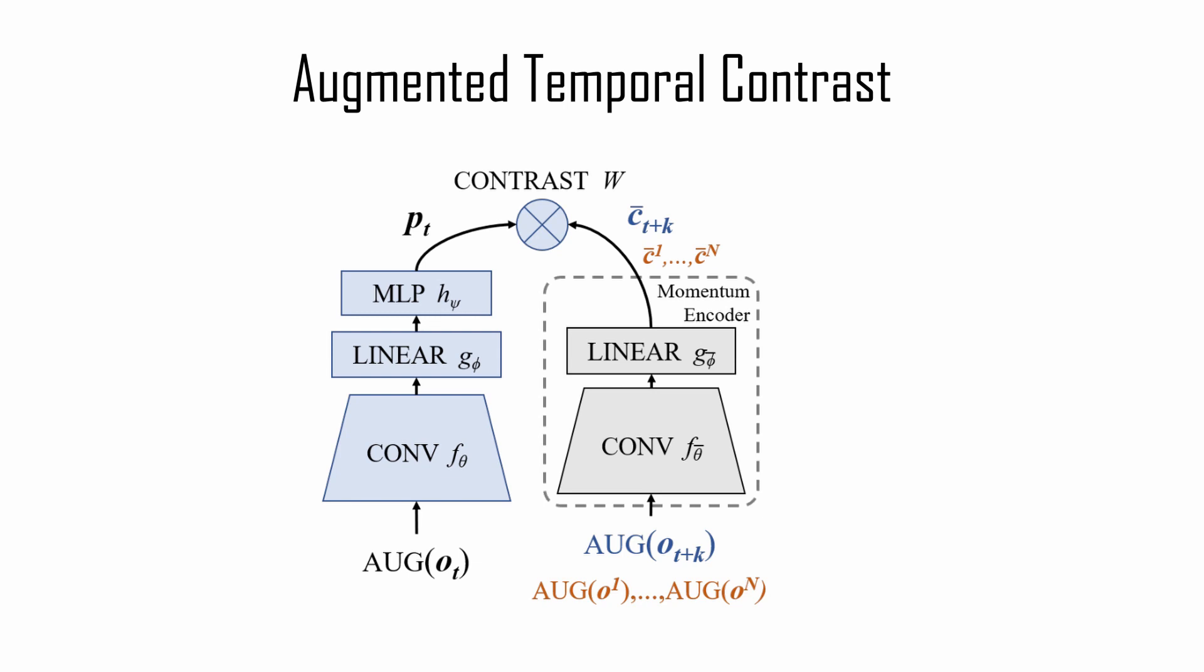Okay, so going back to our paper, they adapt contrastive learning for reinforcement learning, by exploiting the sequentiality of the observation in the environment. They do so by associating an observation with a near-future timestamp, instead of the same image as commonly done in computer vision, and the observations are augmented with random shift.